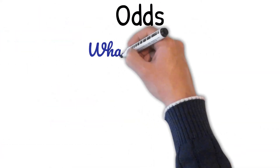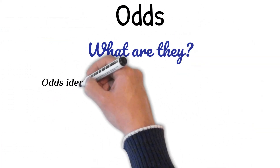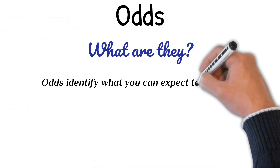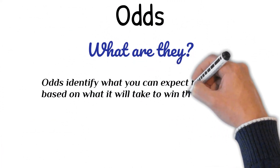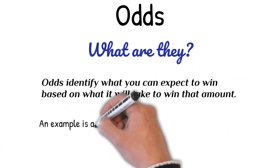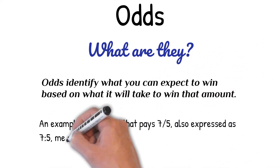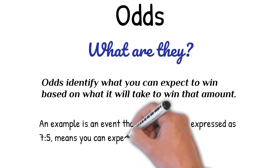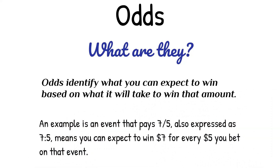Odds — what are they? Odds identify what you can expect to win based on what it will take to win that amount. An example is an event that pays seven to five, also expressed as a ratio. Seven to five means you can expect to win seven dollars for every five dollars you bet on that event.